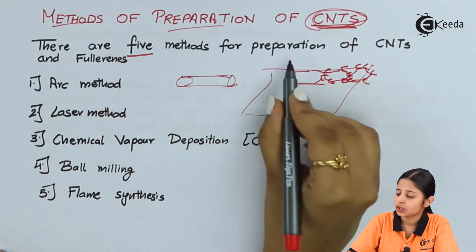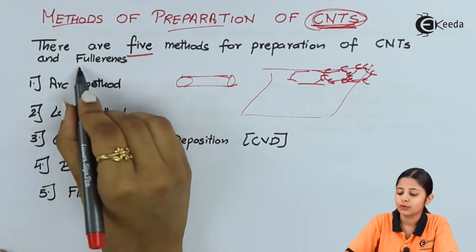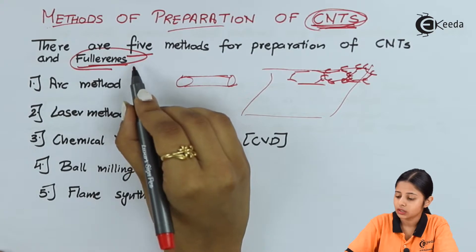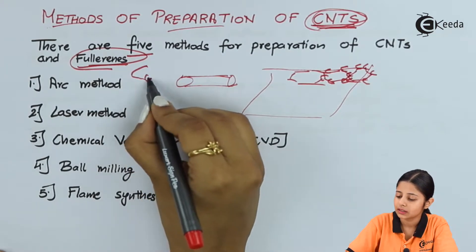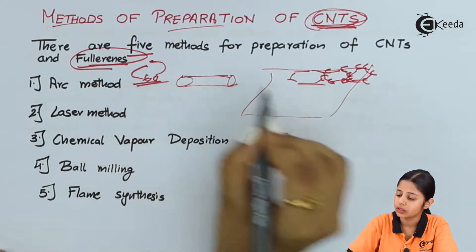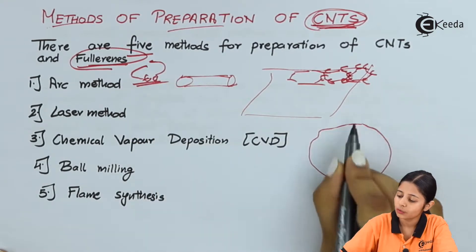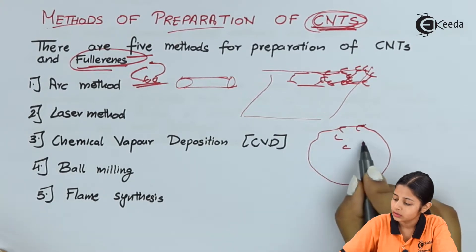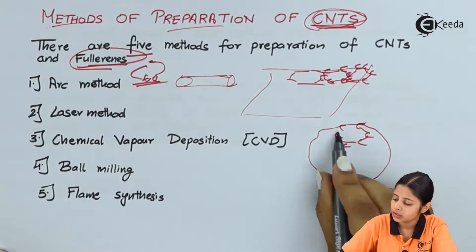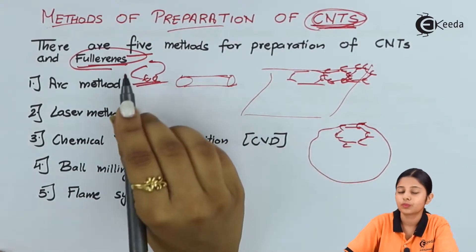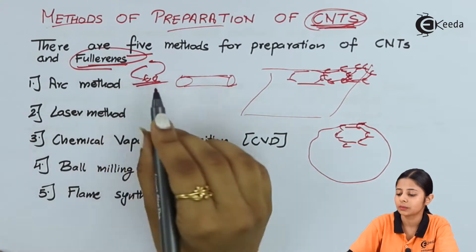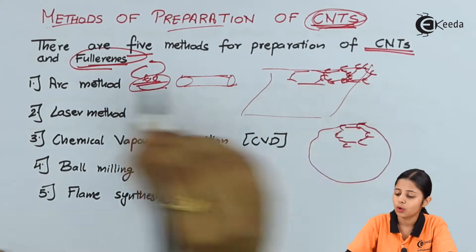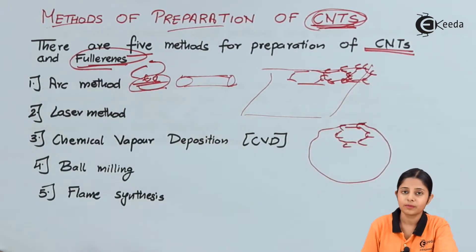There are five methods of preparation of carbon nanotubes and fullerenes. Fullerenes are also known as Buckminster's ball, that is C60. There are 60 carbons in a fullerene, all connected in the form of a sphere — a carbon sphere containing 60 carbons. Whenever I want to make a carbon nanotube or a fullerene, there are five methods for preparing it.